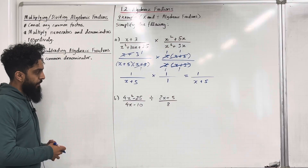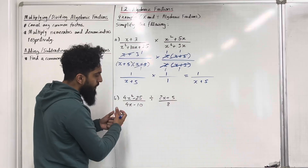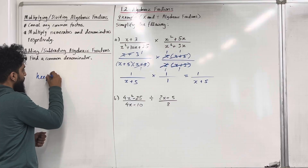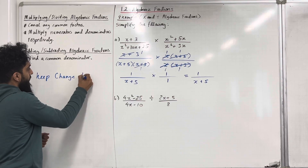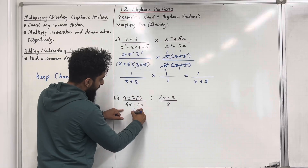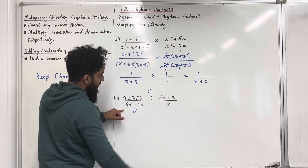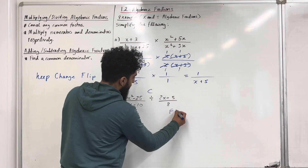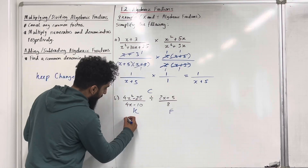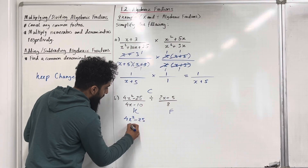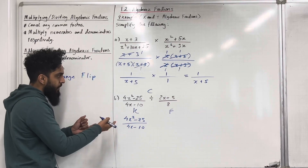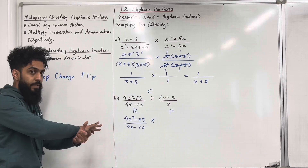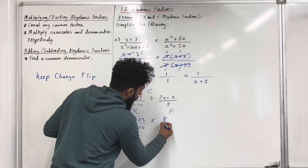Moving on to part B. Over here we are now dividing two fractions. When you divide two fractions, you need to use the keep-change-flip method. We're going to keep this fraction, change the division into multiplication, and flip the second fraction. So I've got 4x squared minus 25 over 4x minus 10, multiplied by the flipped fraction, which is 8 over 2x plus 5.